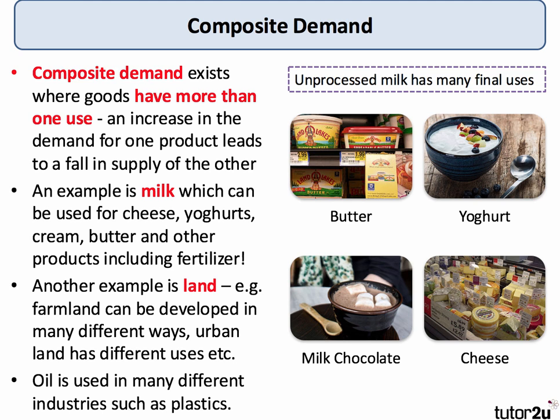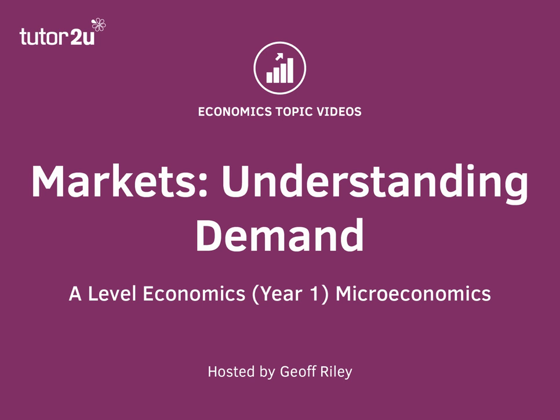Oil is also in composite demand because it can be used in so many different industries, including fuel and power, but also things like plastics. So that's derived demand and composite demand.